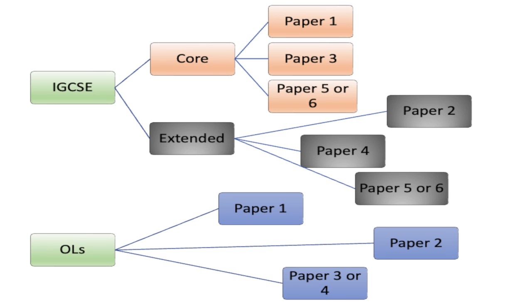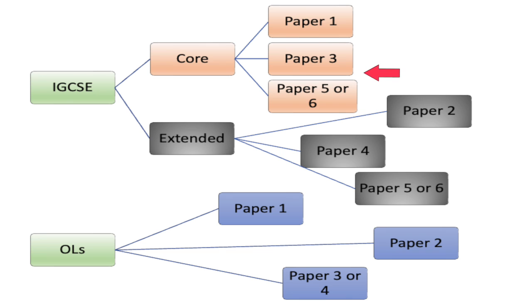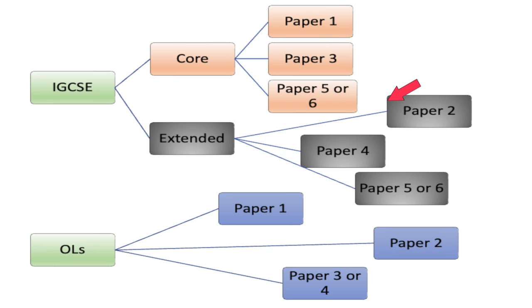In IGCSE we have two branches: Core and Extended. In Core, you should pass through three papers. Paper one and paper three both consider Core, then you need to go through paper five or paper six. In paper one, three, five, or six you get a Core certificate, and the maximum grade you can be awarded is from C up to G — C is the maximum grade, G is the minimum.